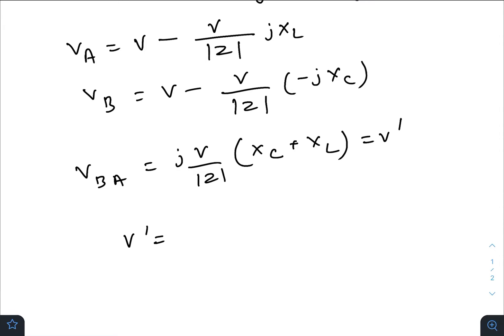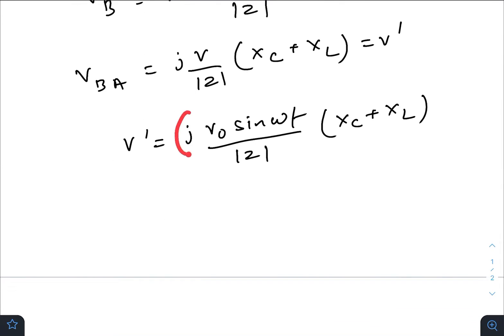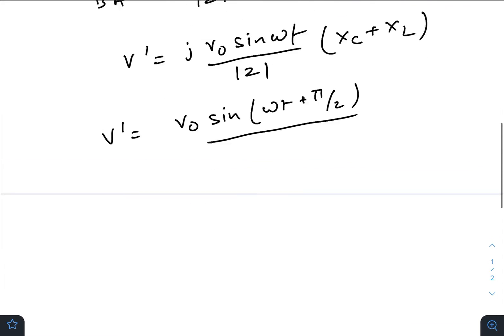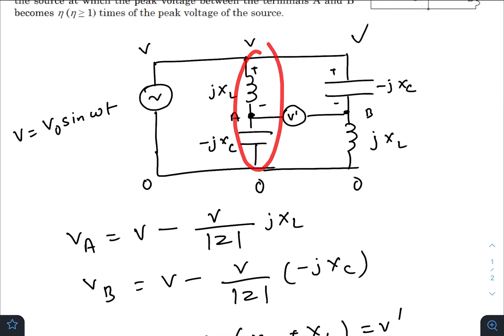So we have V' equals this. Finally, V' can be written as jV₀sin(ωt) divided by |Z| times (XC + XL). Now if you absorb this value of j inside the phase, we can modify the equation like sin(ωt + π/2) divided by |Z|. Now let us write down Z because both the branches have same impedance.